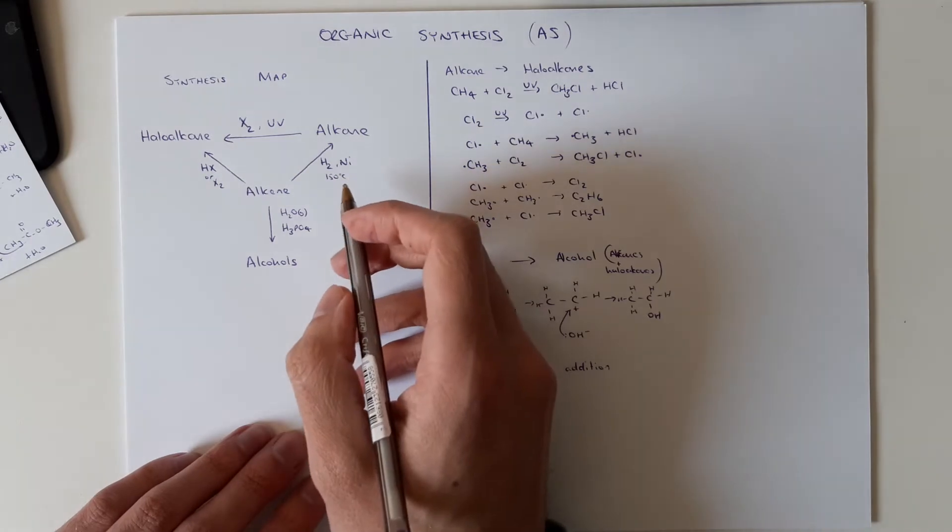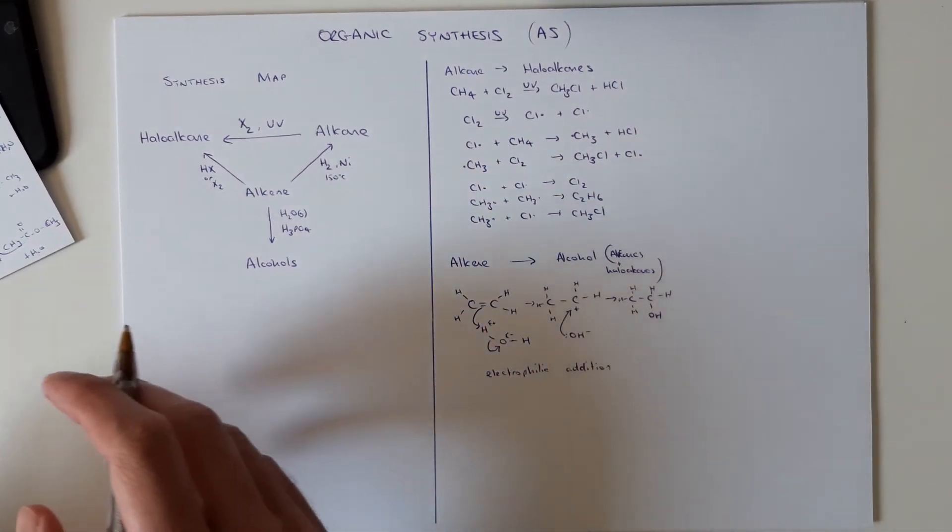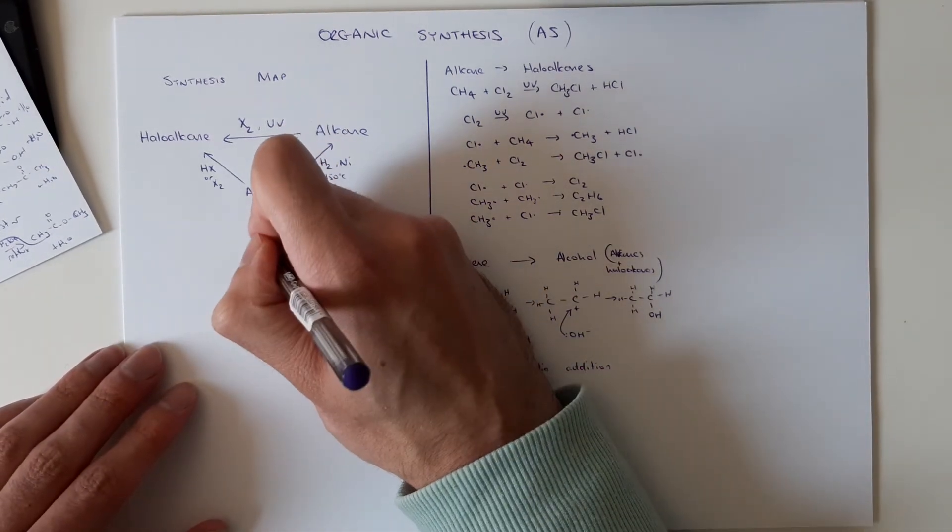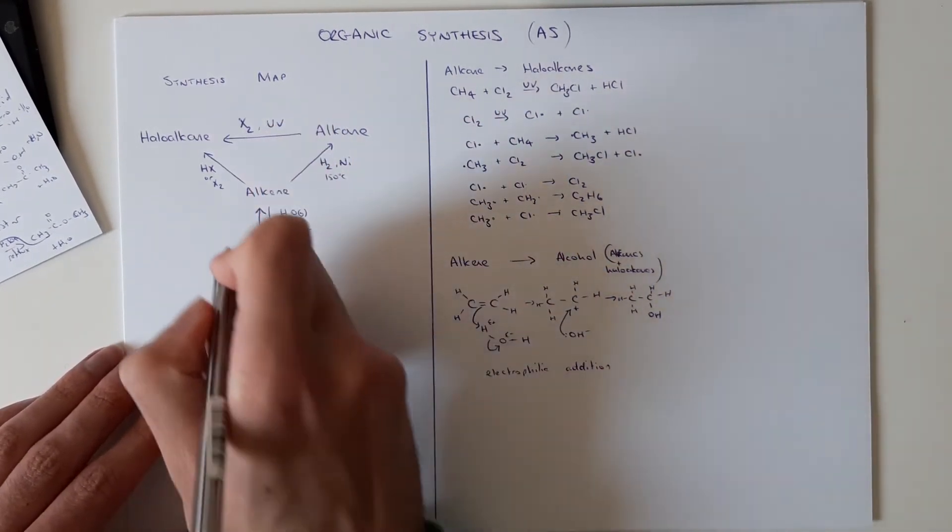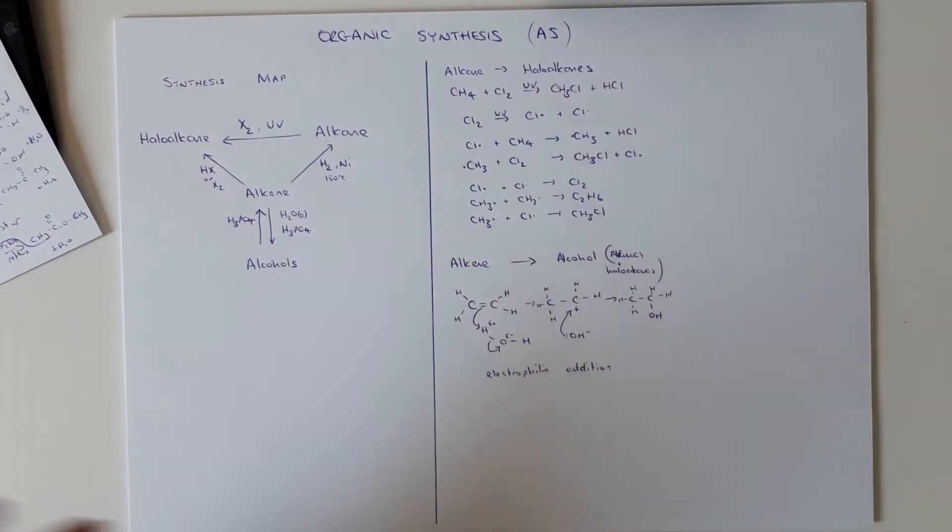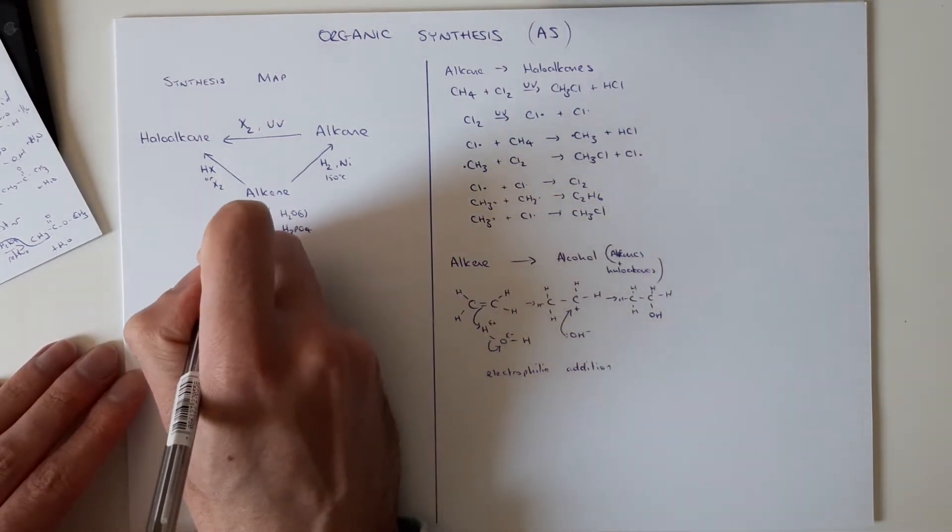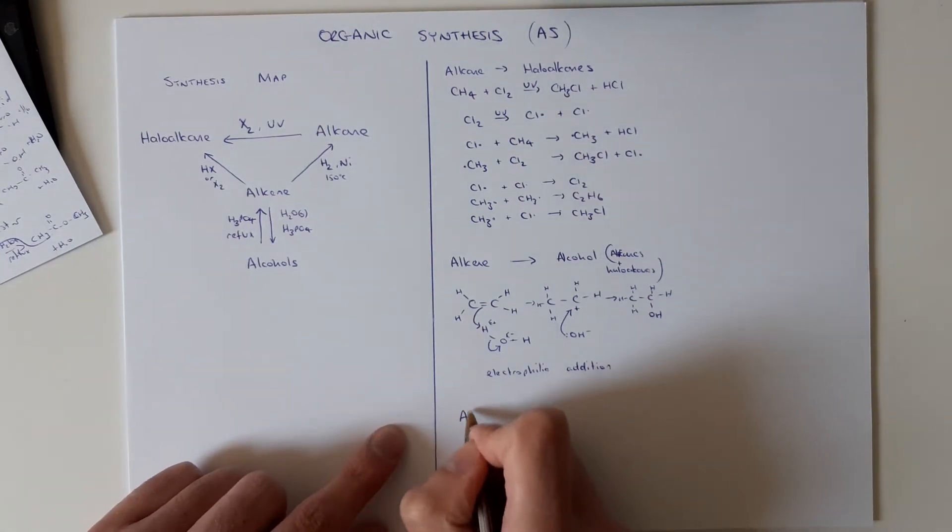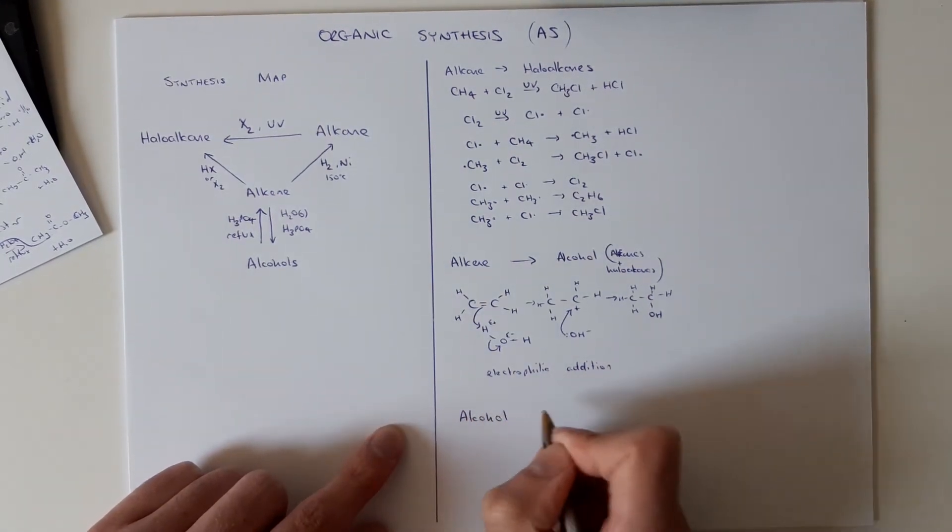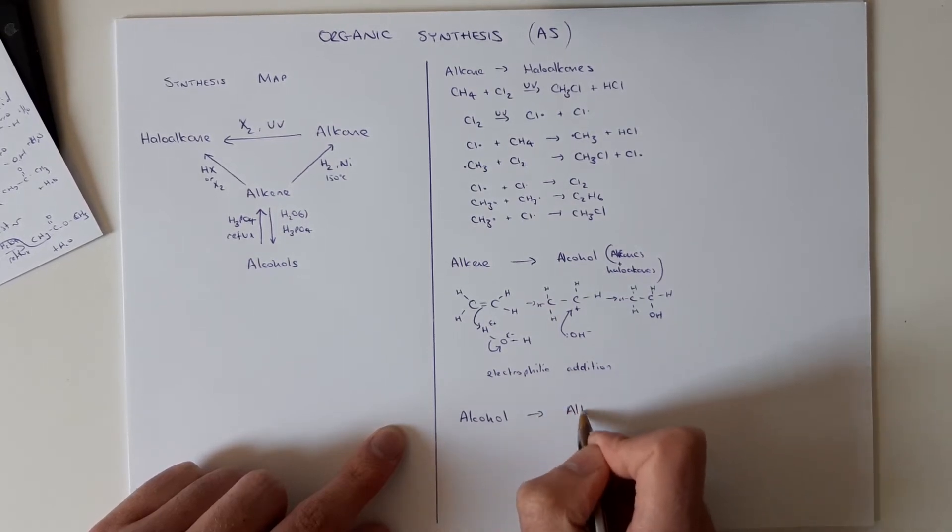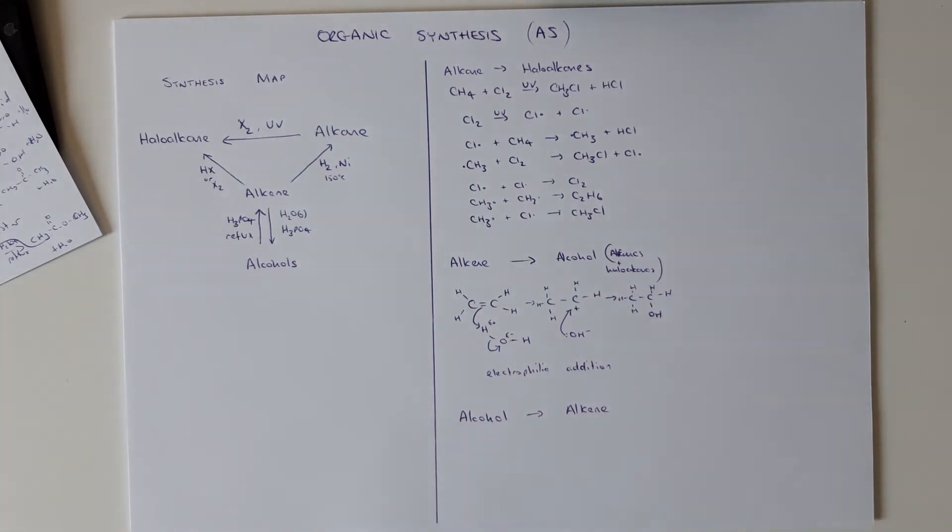We can then do alcohol to alkene. Let's go back along here to do that. I need strong acid. H2SO4 works as well. H3PO4 is a good strong acid. And I'm going to reflux this, just heat this up. So alcohol to alkene. It's known as a dehydration reaction. Because we start with one product in dehydration, we give off water.